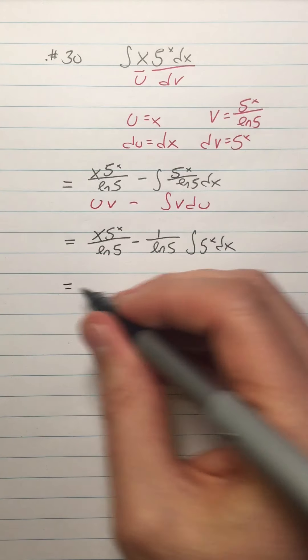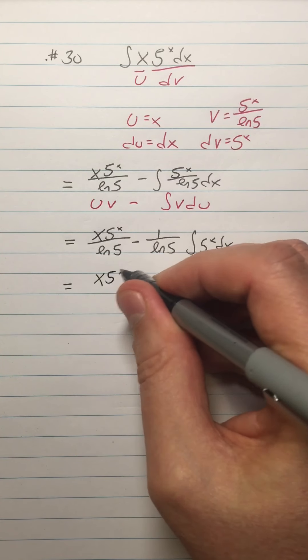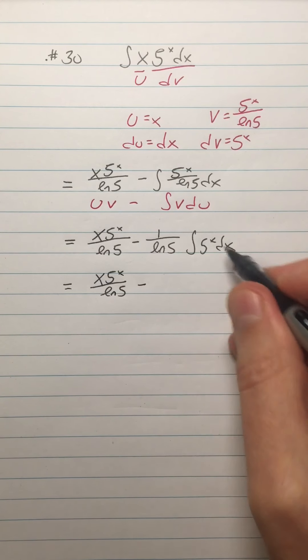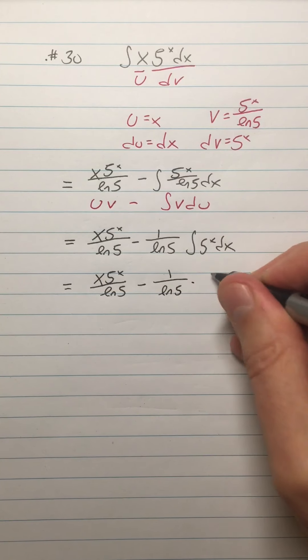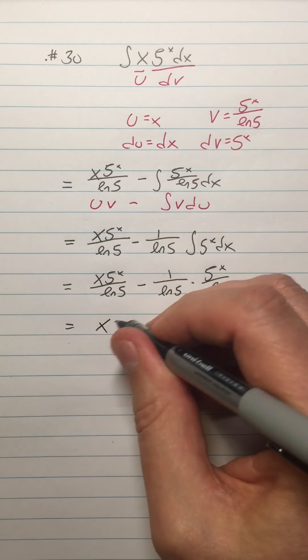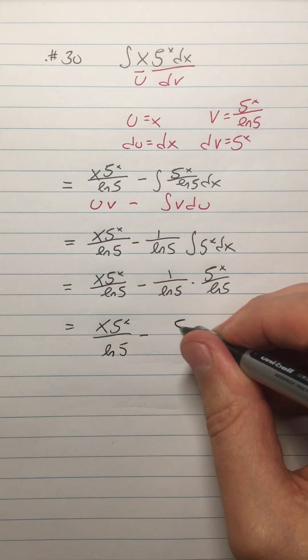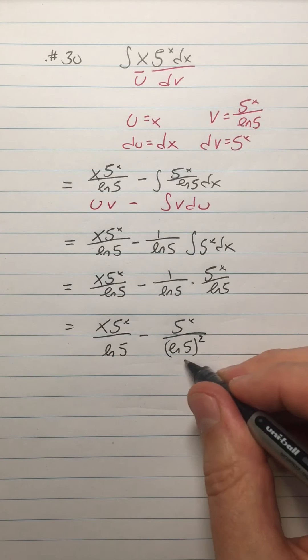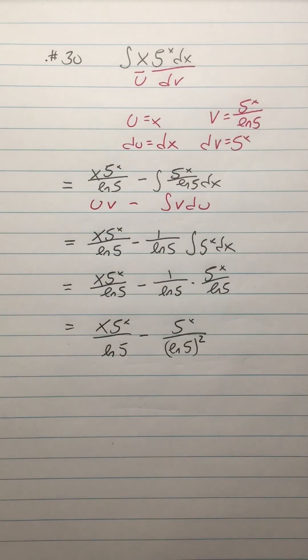It's a straightforward, simple example, but I just wanted to remind you of this antiderivative lest ye forget. So this is x to the five x over ln 5, minus. So then this is going to be five to the x over ln 5. So, well, let's go ahead and write it out ln 5 times five to the x over ln 5. It'd be nice to condense that down a little bit to x five to the x over ln 5 minus five to the x over ln of five squared.